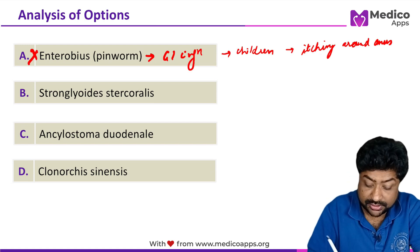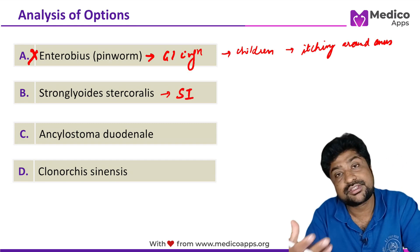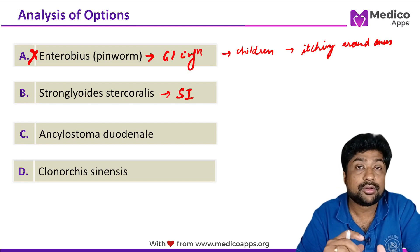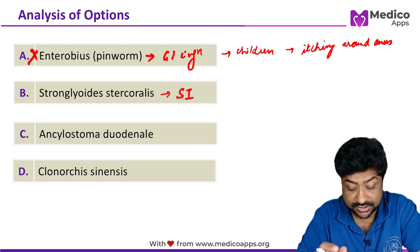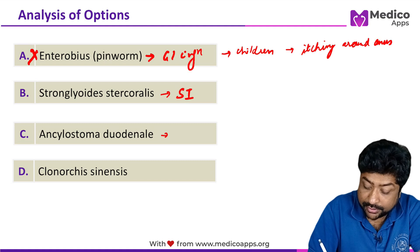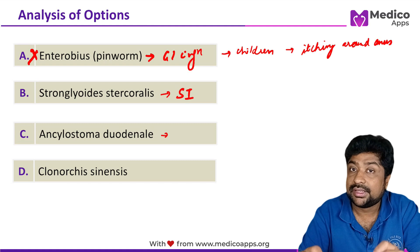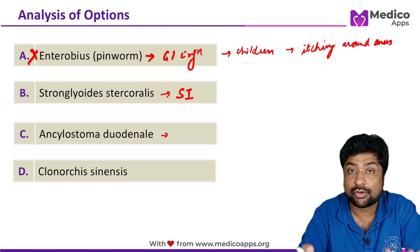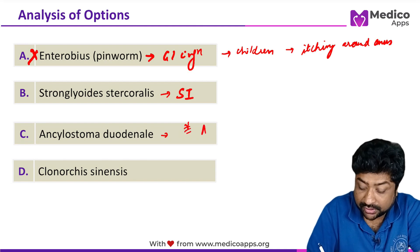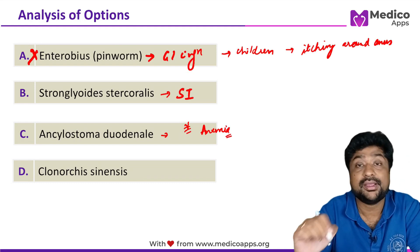Strongyloides stercoralis is a small intestine infection with similar symptoms like abdominal pain and diarrhea. However, liver or gallbladder infection is not seen in Strongyloides. Similarly, Ancylostoma duodenale is an intestinal GI infection with similar symptoms, but liver and biliary apparatus involvement is not seen. What is characteristic of Ancylostoma duodenale is anemia — the patient will have anemia in these cases.